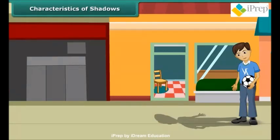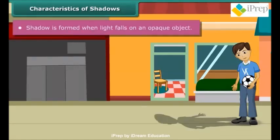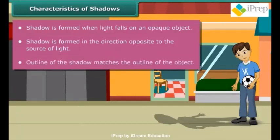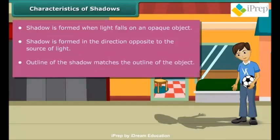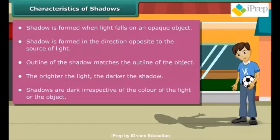Let us list the important characteristics of shadows. A shadow is formed when light falls on an opaque object. A shadow is formed in the direction opposite to the source of light. The outline of the shadow matches the outline of the object. The brighter the light, the darker the shadow.